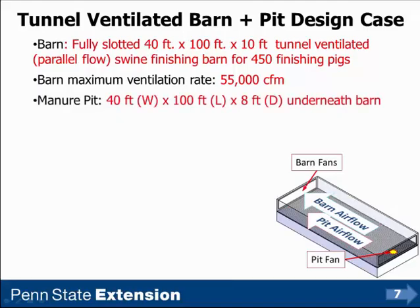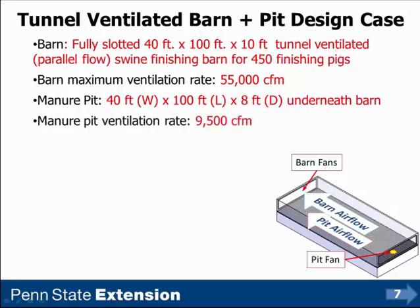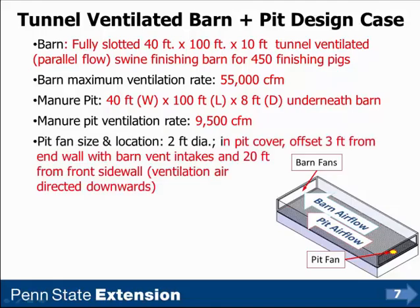The manure pit extends under the entire tunnel ventilated barn — so it's 40 feet wide, 100 feet long, and 8 feet high. The manure pit ventilation is 9,500 cubic feet per minute. That pit fan is a 2-foot diameter fan located in the pit cover, offset 3 feet from the end wall of the barn with the barn vent intakes, and 20 feet from the front side wall of the tunnel ventilated barn and pit. The ventilation air is directed downward, perpendicular to the manure pit cover.